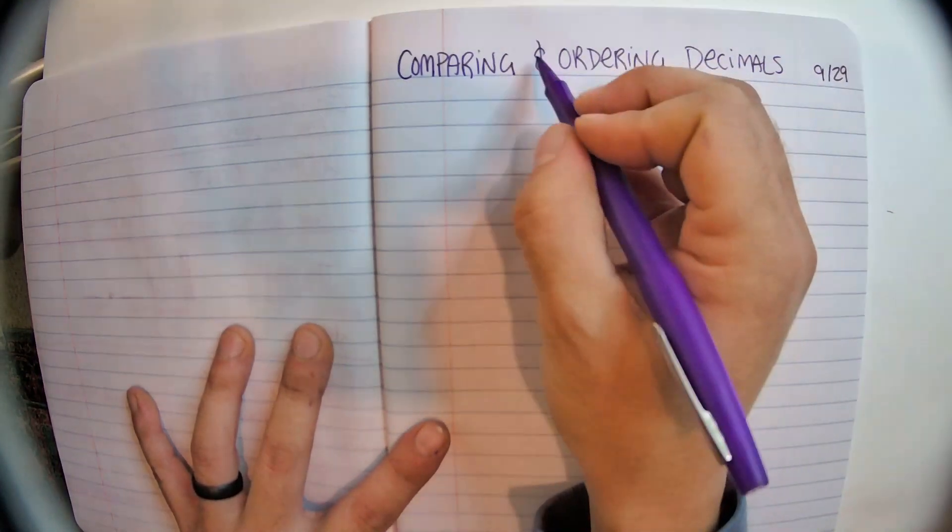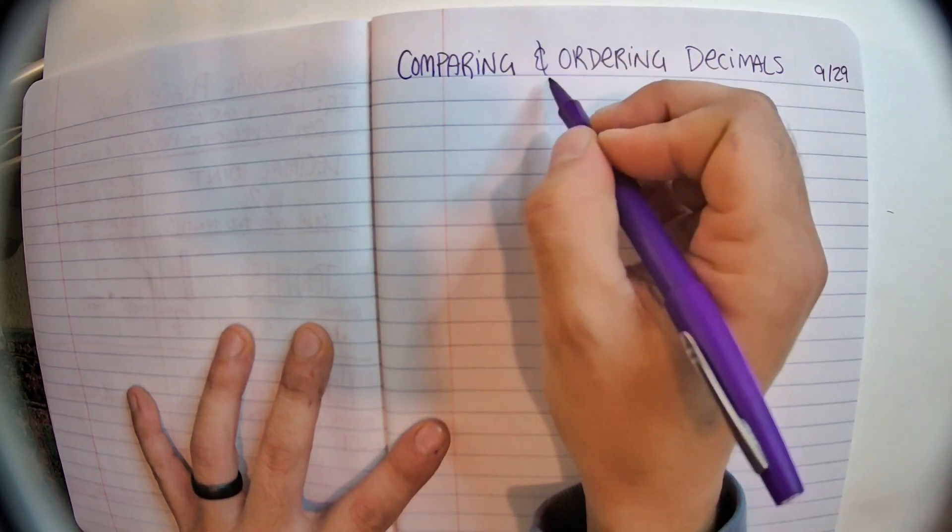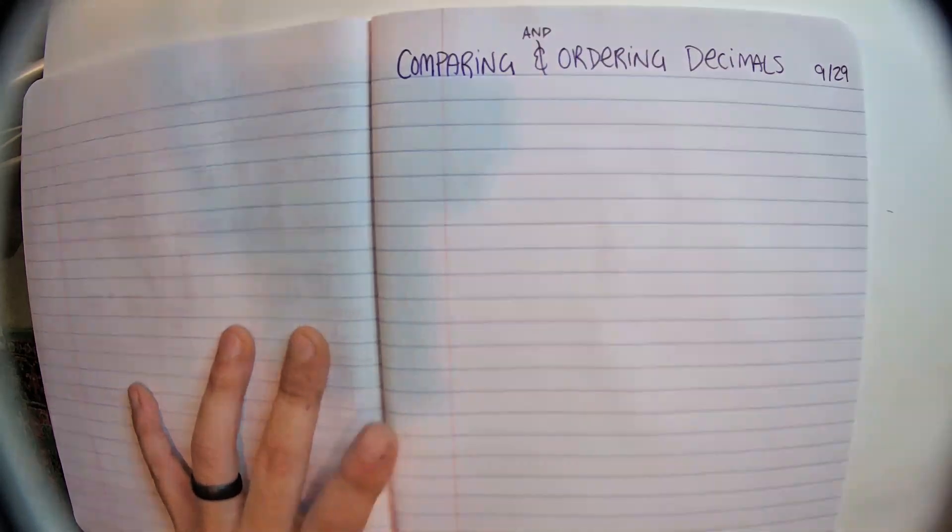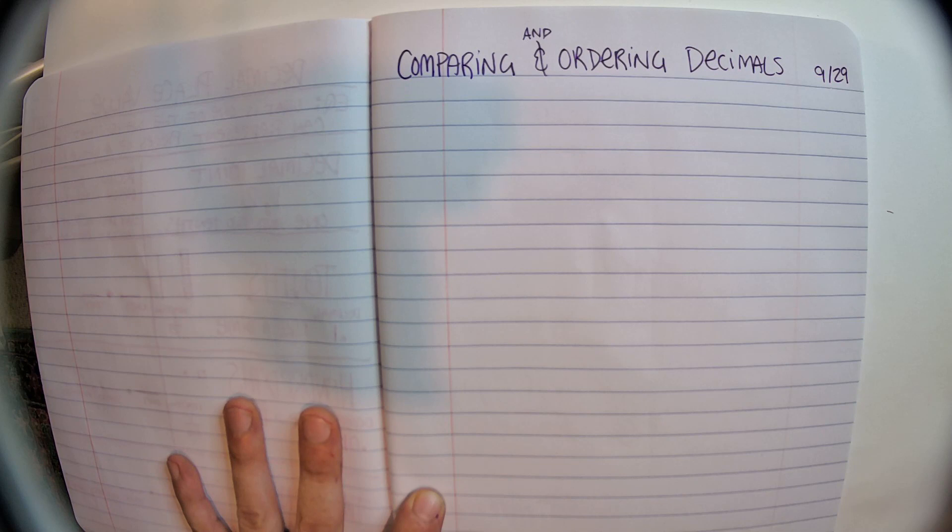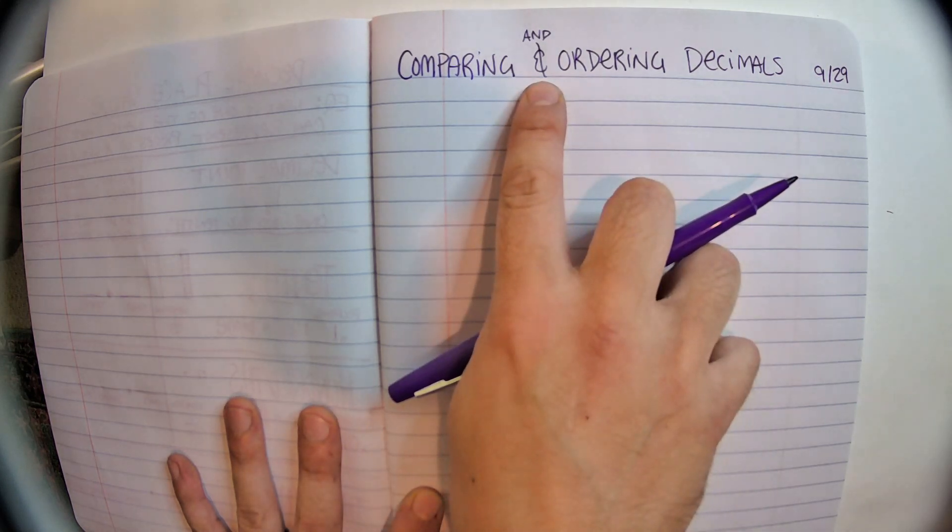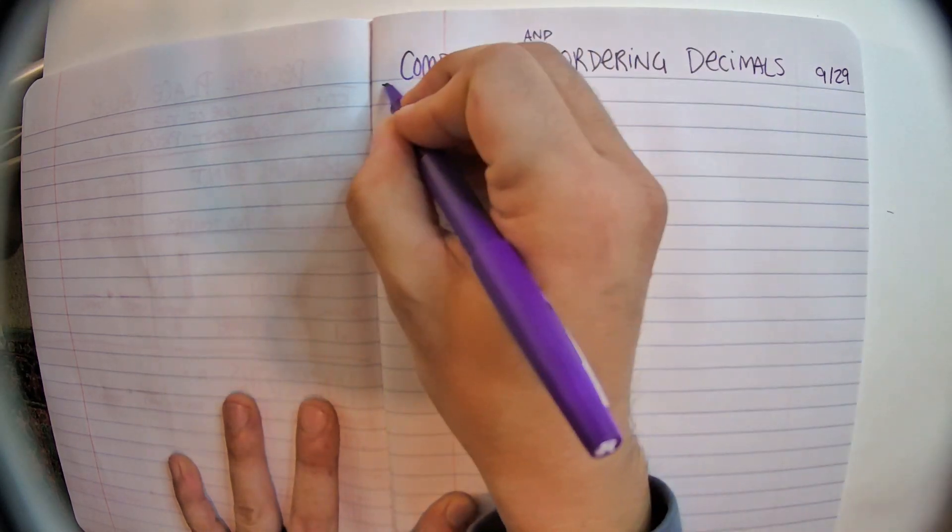So this is just an ampersand. It's like a backwards three with a line through it. It means 'and,' so if that's confusing you can always write 'and' as well. It's kind of a time saver, plus it looks kind of cool.